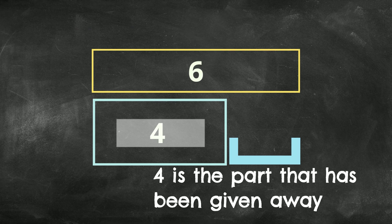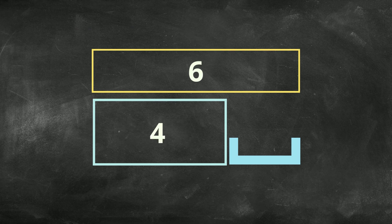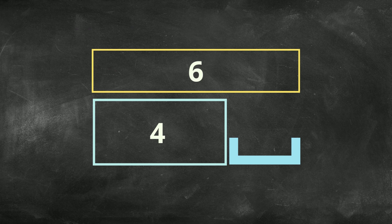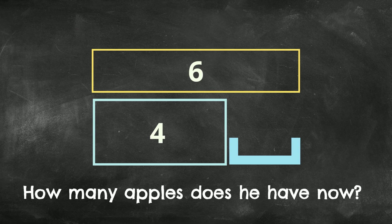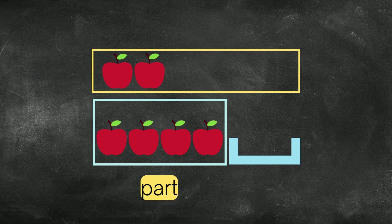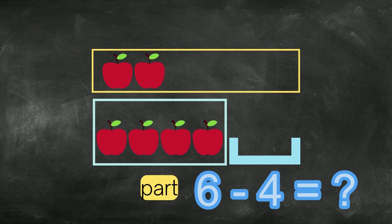So now I have two pieces of information. 6 is the whole that's in the bigger bar. And then 4 is the part that he gives away. The next part in the problem says, how many does he have now? Which means how many does he have left? So I have to subtract 4 from the whole, which is the 6. So what is 6 minus 4?